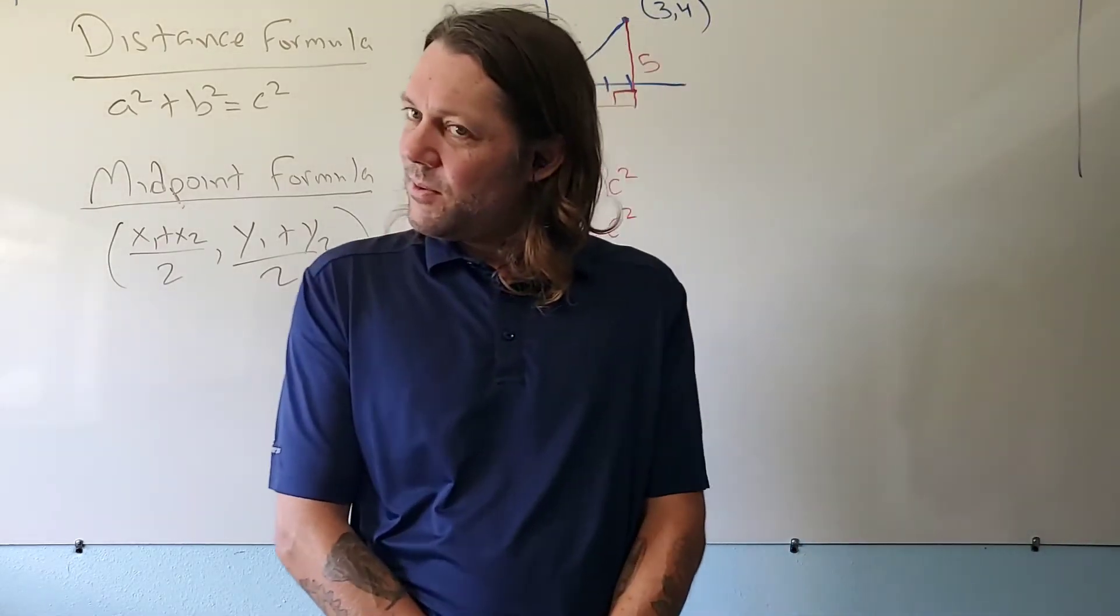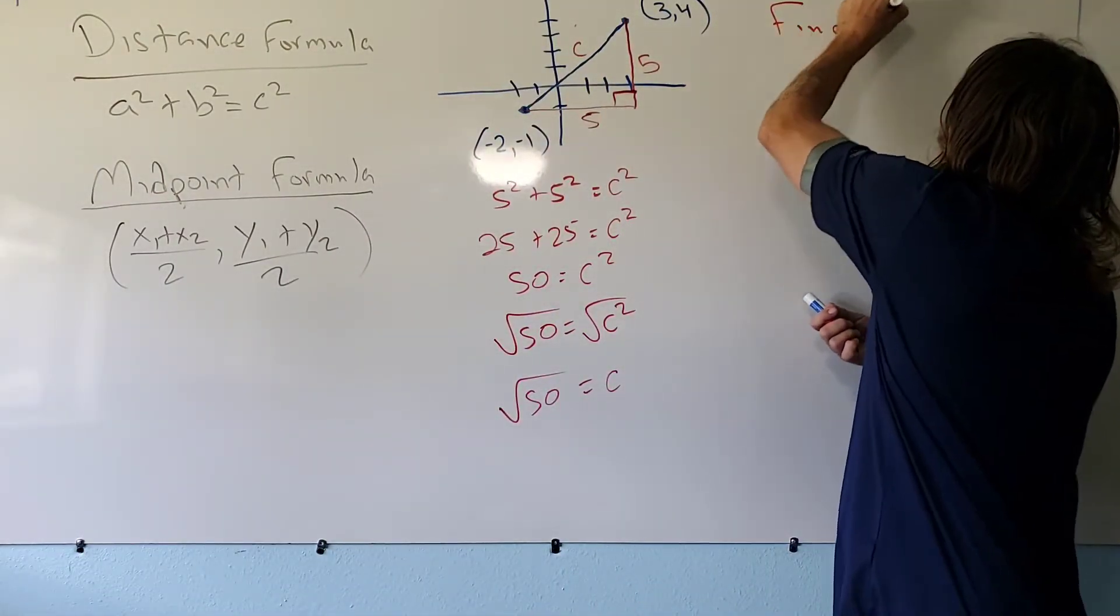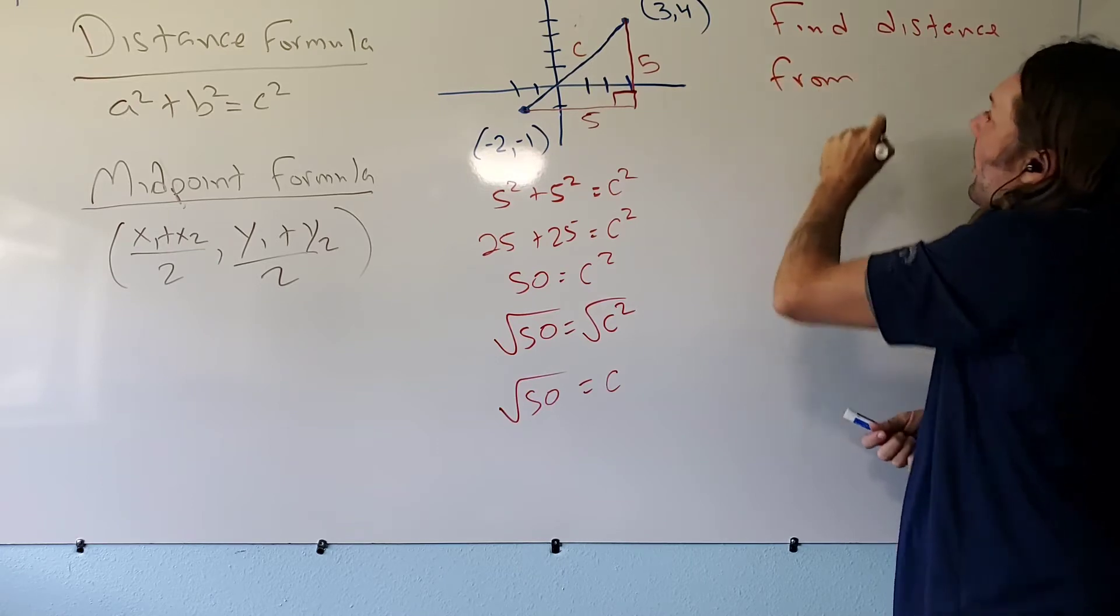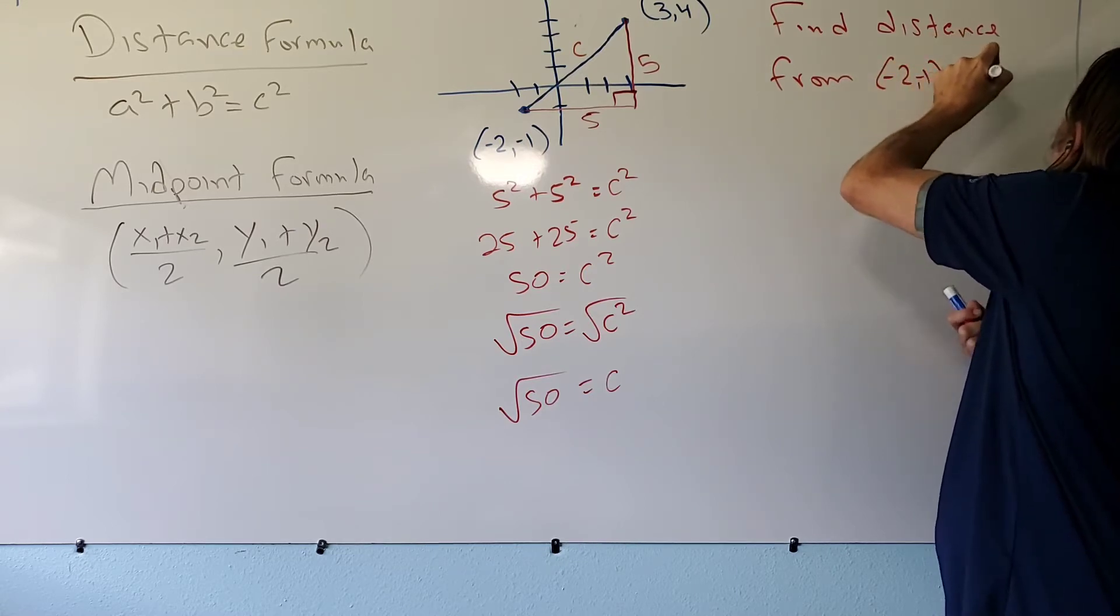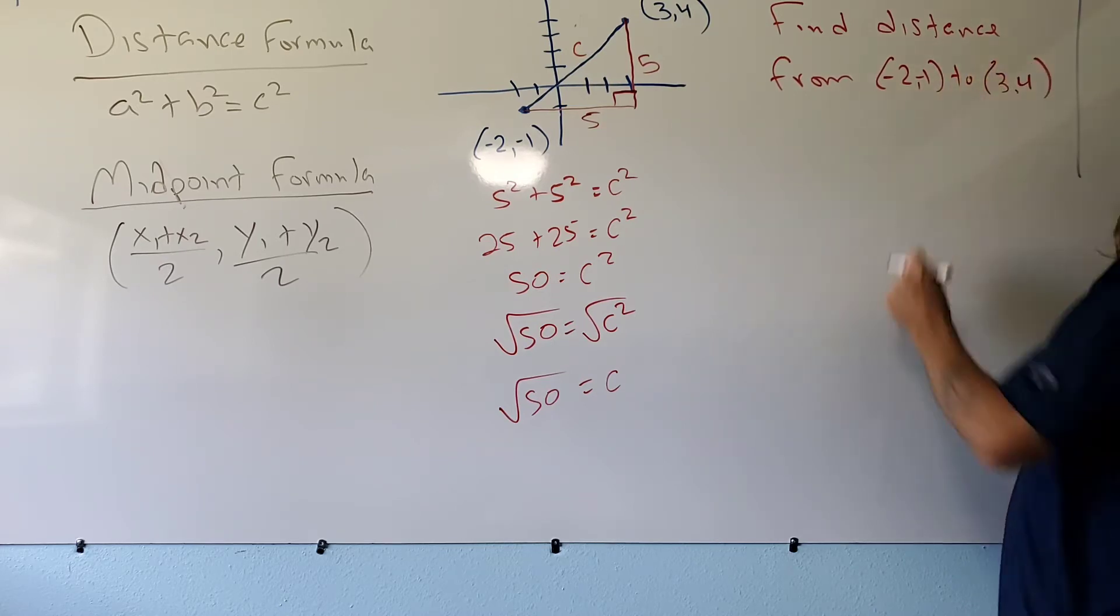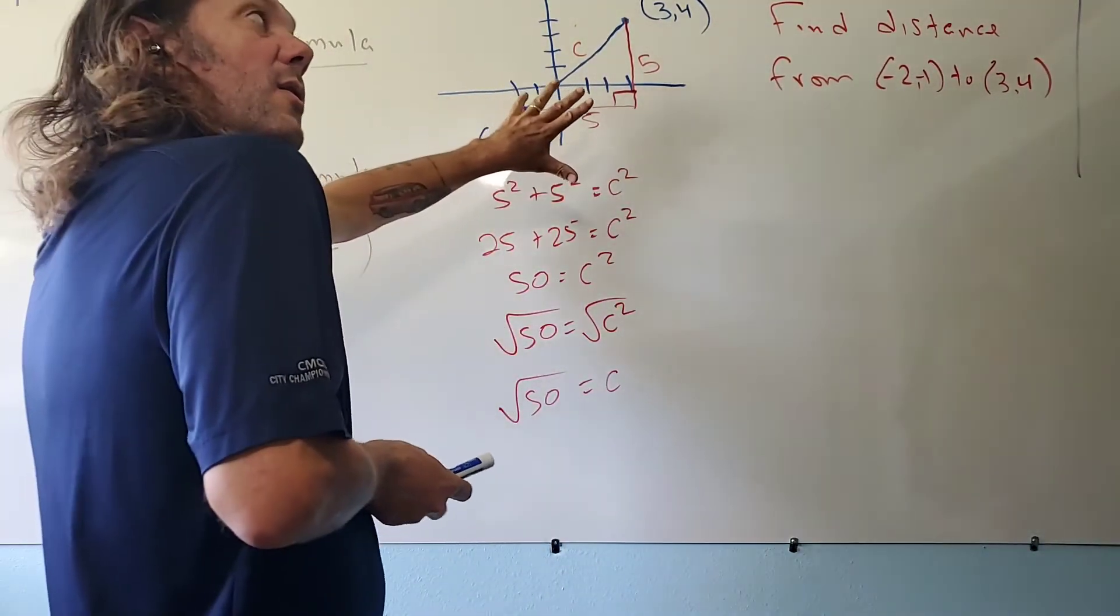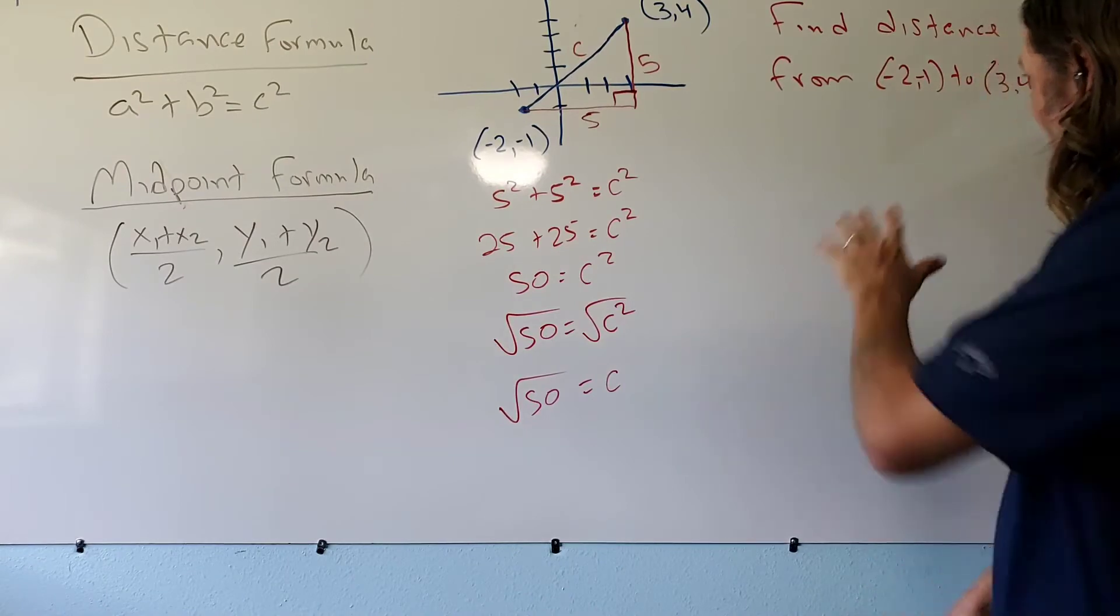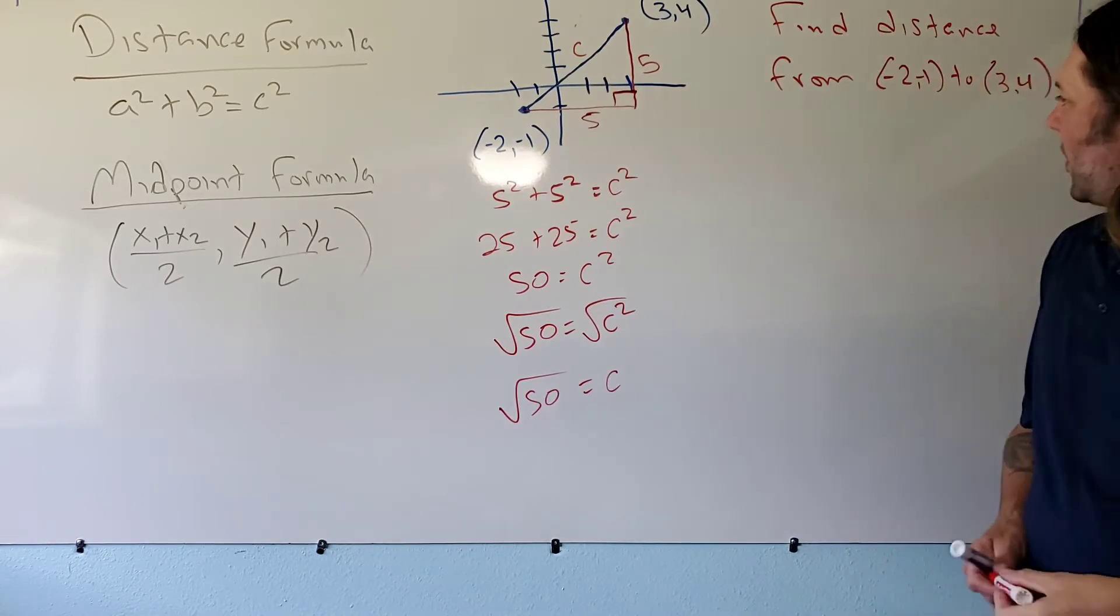Alright, this problem could have also been asked to you in the following way: find the distance from negative two, negative one to three, four. So I can give you this problem as a picture, or I can give you the exact same problem just telling you what the endpoints are.